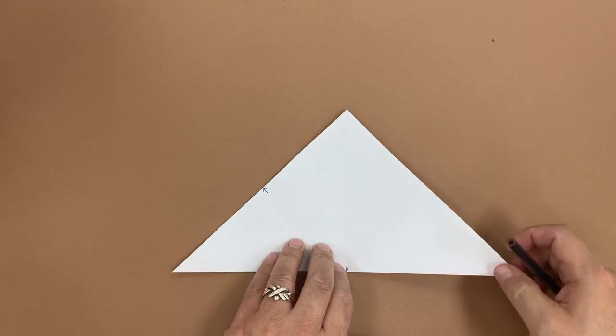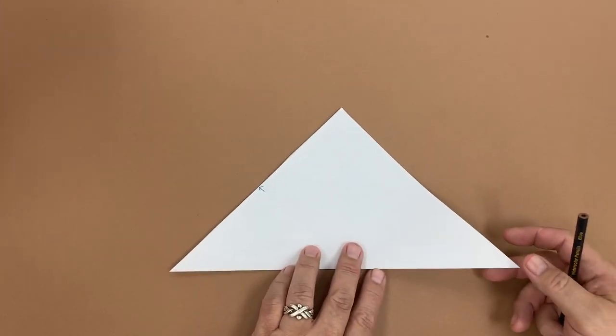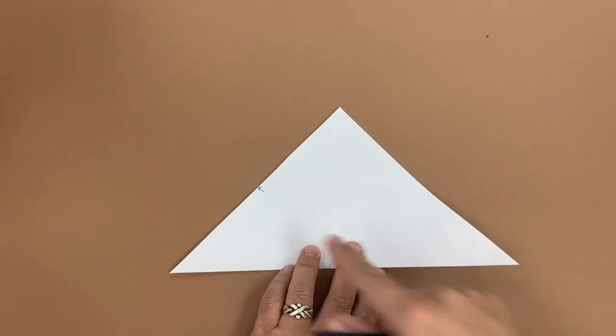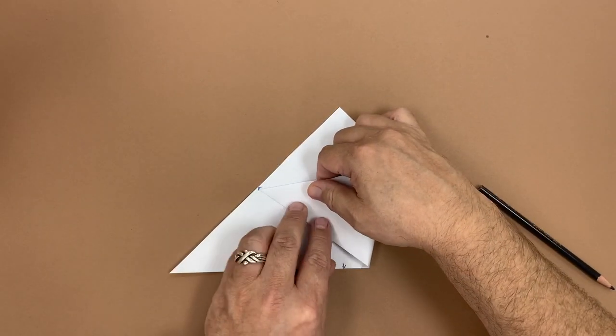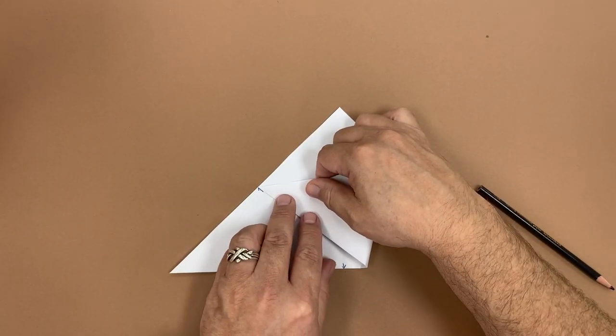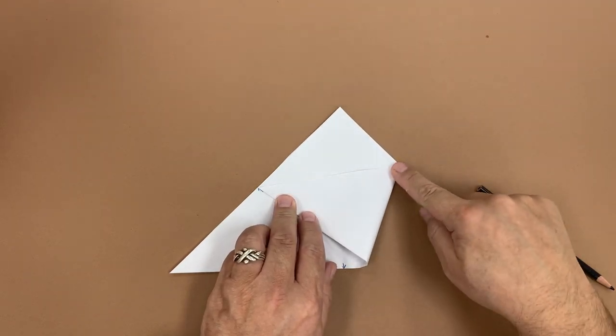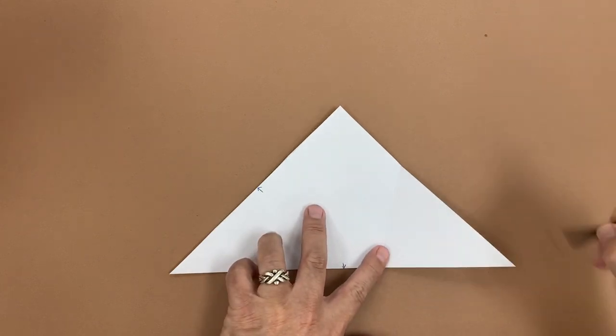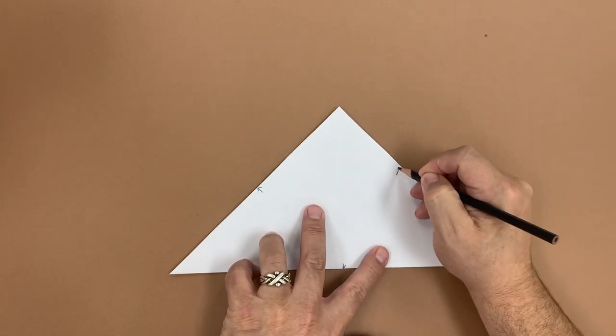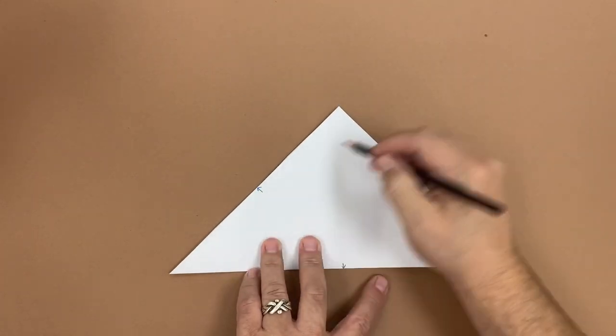Then we need our third reference mark, and this one is a little unusual. We're going to fold this tip to that point. Just like that. And then over here is where I make my pinch mark, and that's the important one. All right. So now we've got our three reference points.